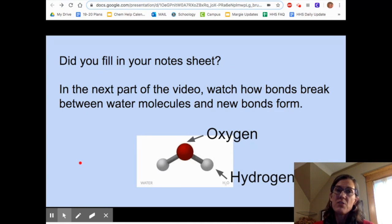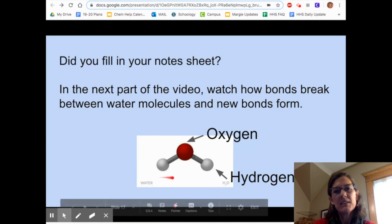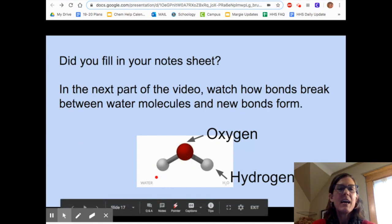So did you fill in your notes sheet? If not, you could pause here and do that and rewind if you need to. And in the next part of the video, watch how bonds are breaking between the water molecules and new bonds are forming. And remember that with the models, the red one is oxygen atom and the white ones are hydrogen atoms. And when they're bonded together like this, it's H2O, water.